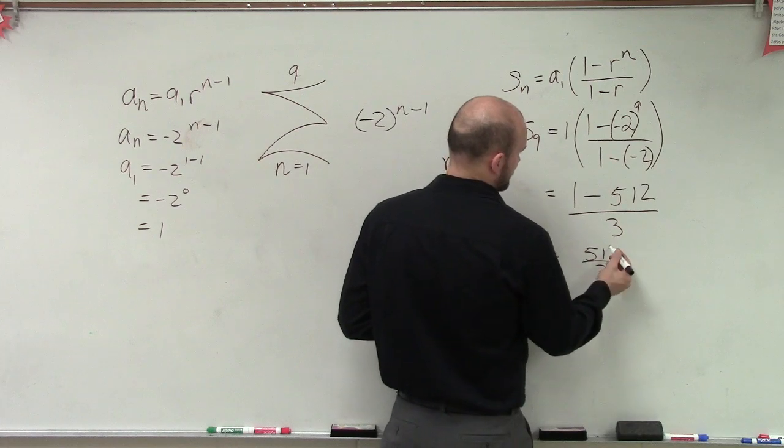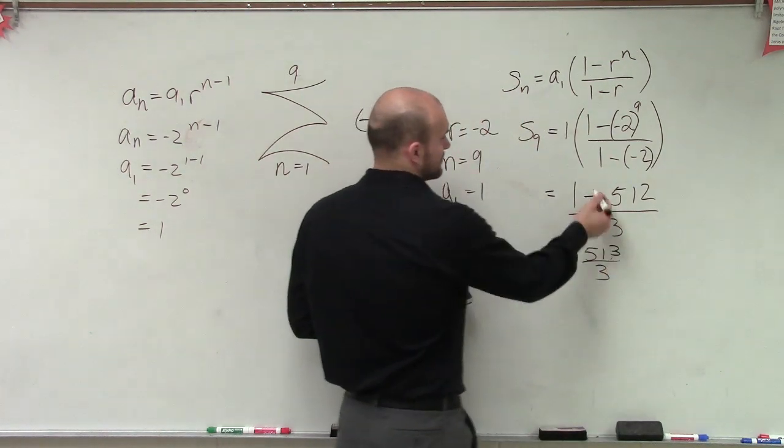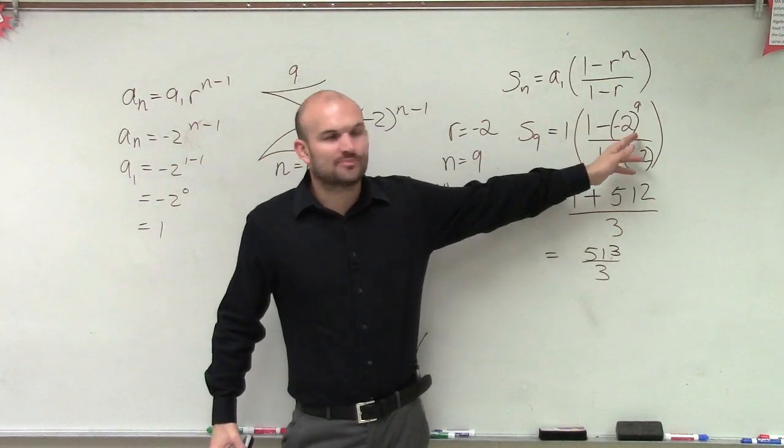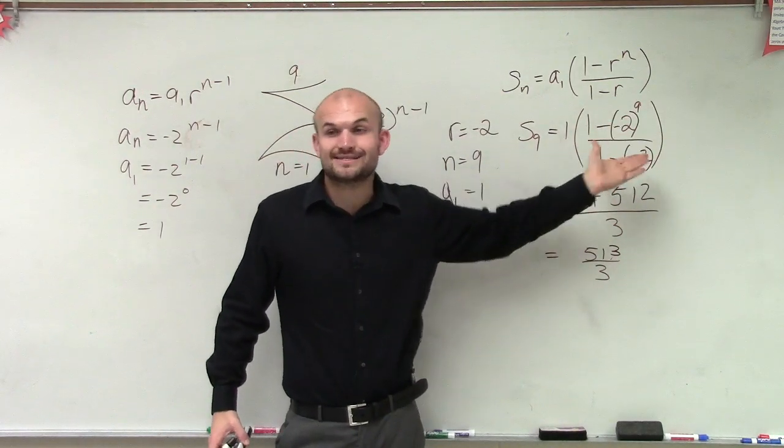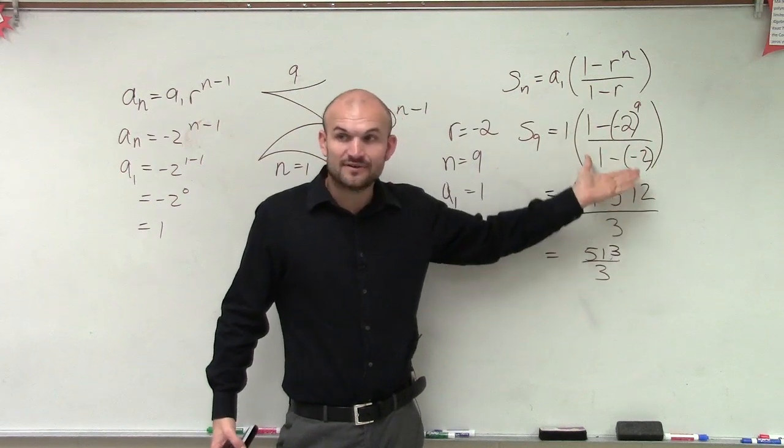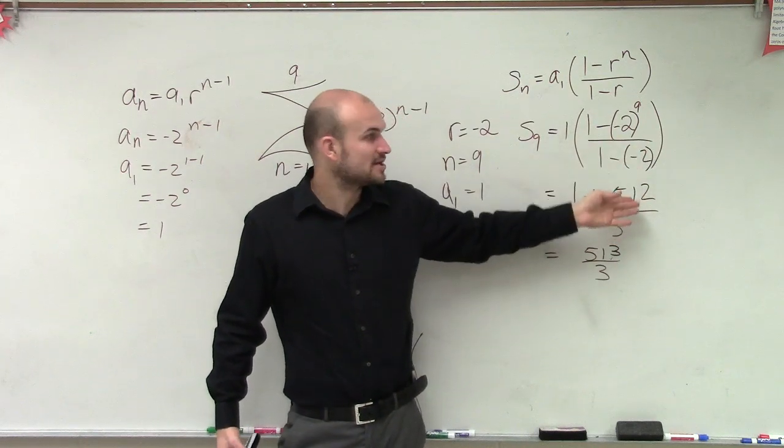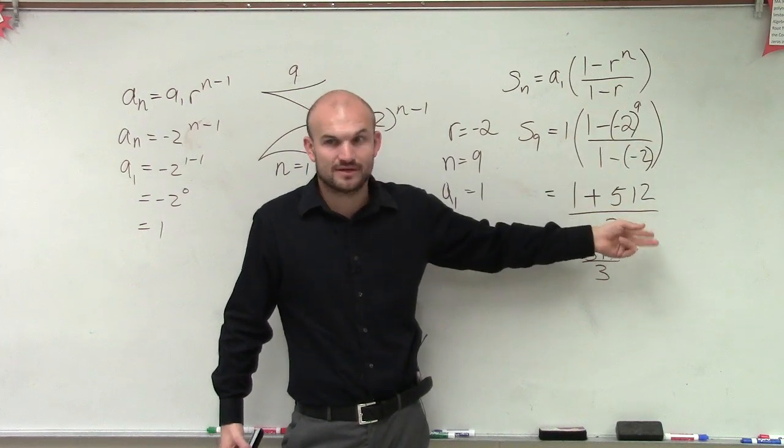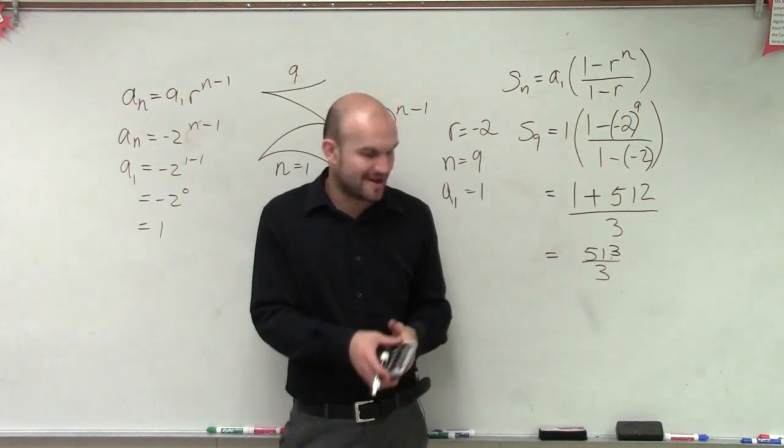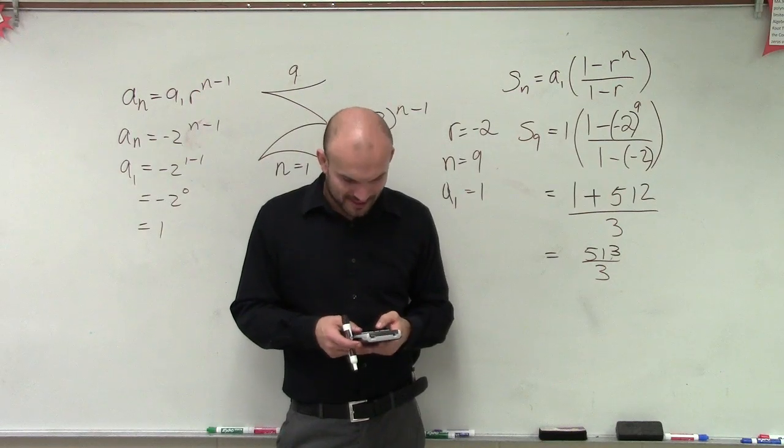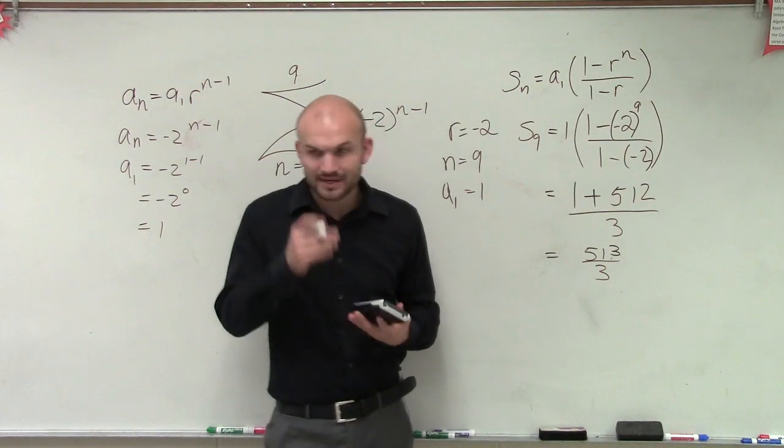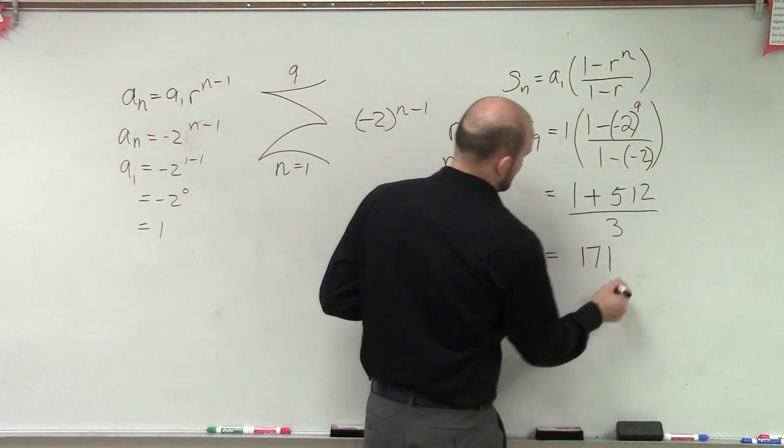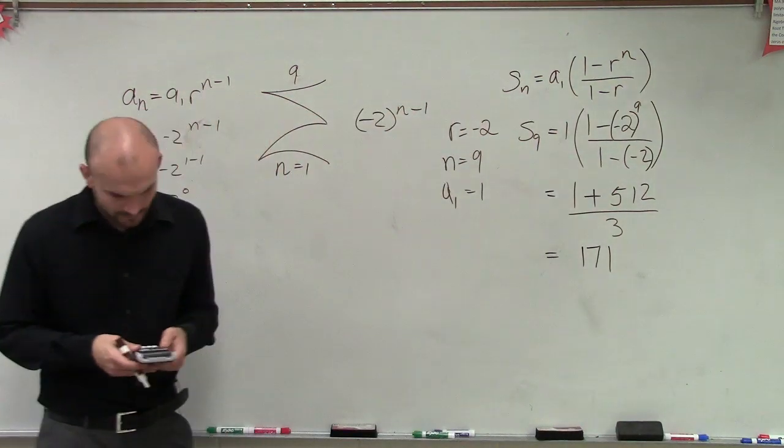I'm sorry, I was going back through. I plugged it in wrong. I didn't put the parentheses around my negative 2. It's negative 2 to an odd power, so it has to be negative 512. And then so a negative 512, 1 minus a negative will make it positive. So it's 1 plus 512, which is 513. 513 divided by 3 is 171. My apologies, I did not put the parentheses in my calculator.